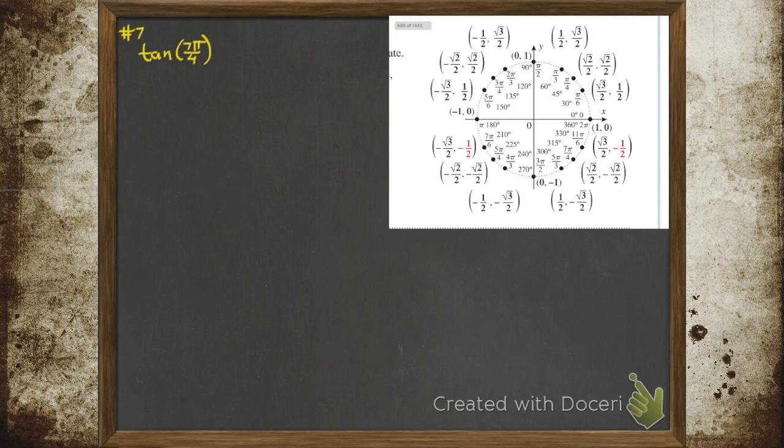So what do we need? We need to find 7π/4. Look. Oh, first, let's rewrite that tangent as the sine of 7π/4 over the cosine of 7π/4.